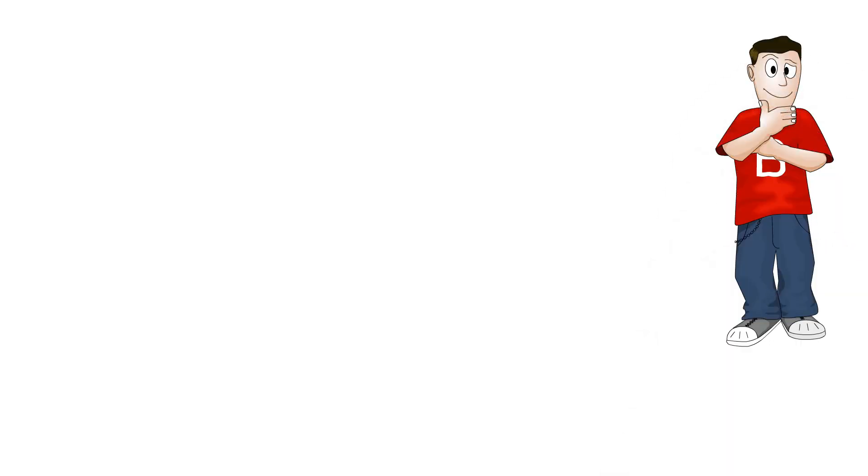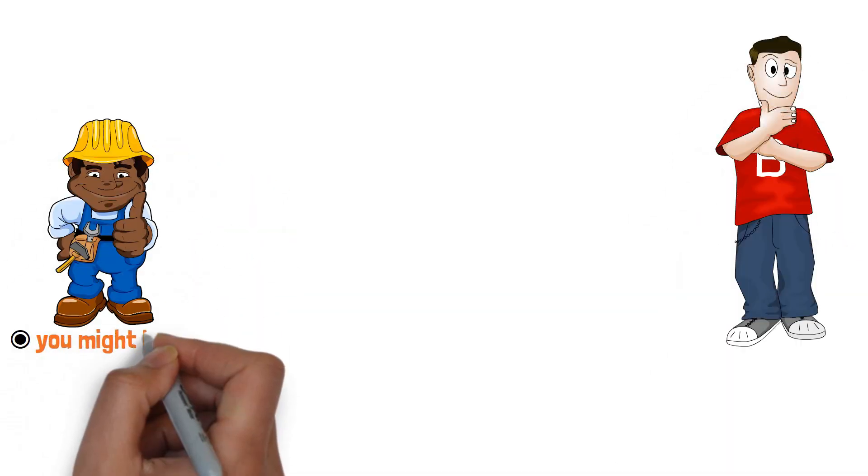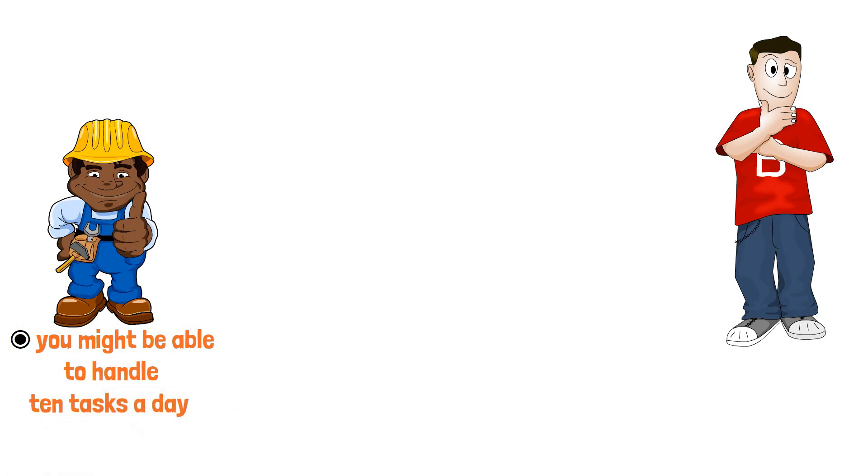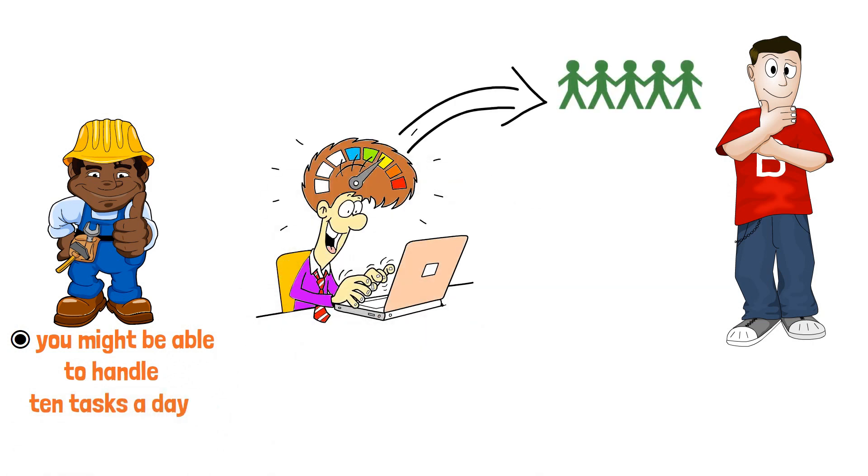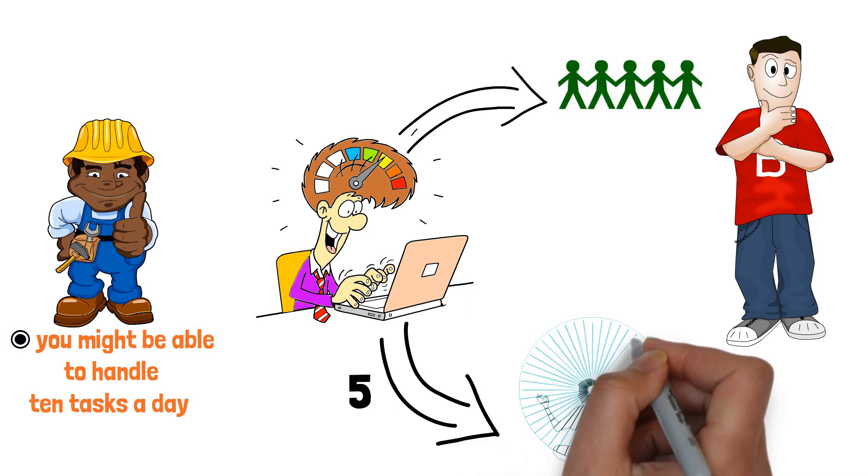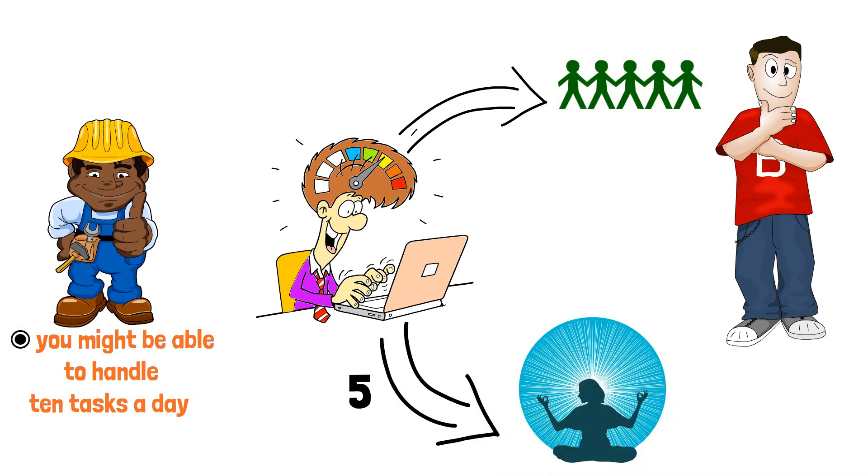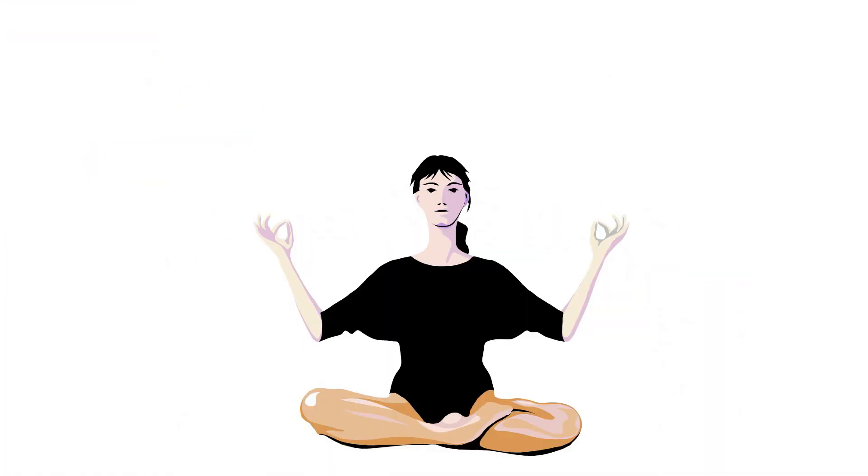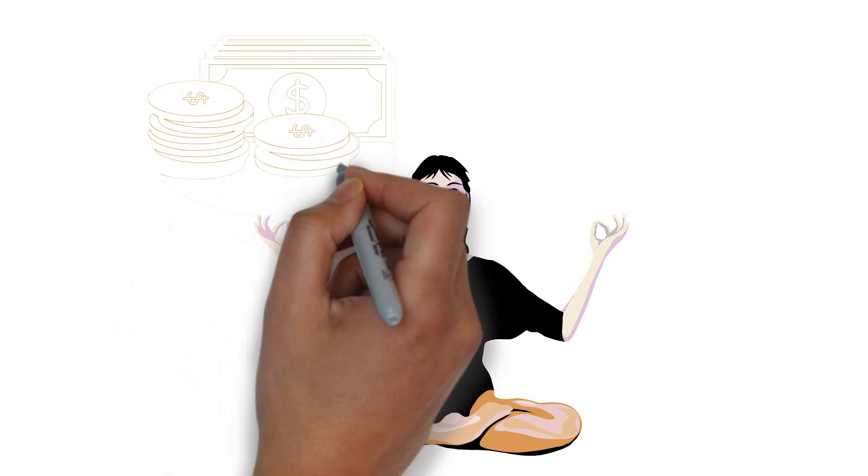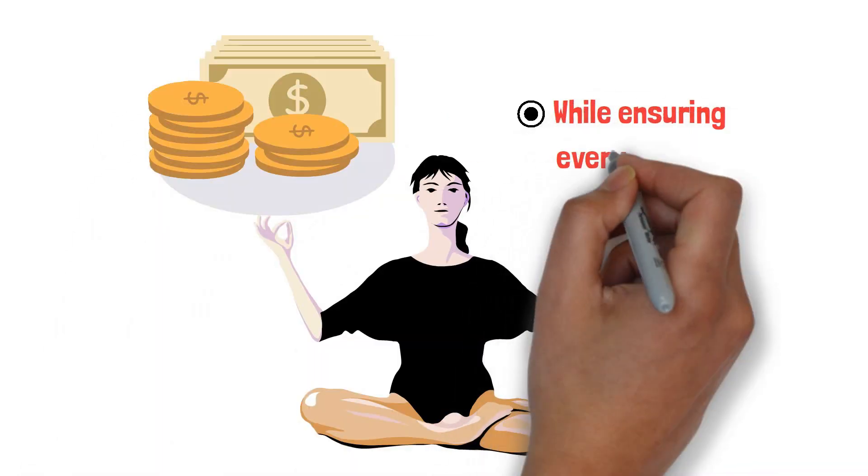Think of it this way. If you're a hard worker, you might be able to handle 10 tasks a day. But if you're an intelligent worker, you can delegate 5 tasks to others, allowing you to focus on the 5 most critical tasks only you can do. This strategy lets you concentrate on activities that generate the most wealth while ensuring everything else gets done.